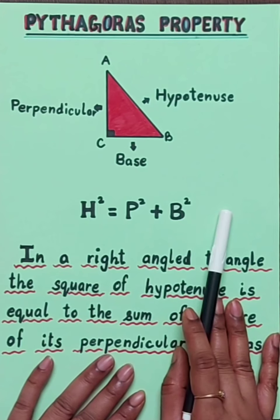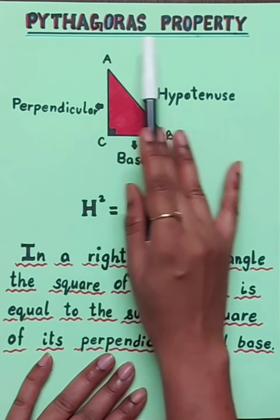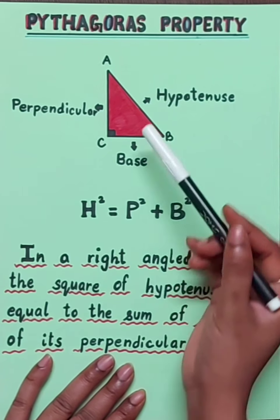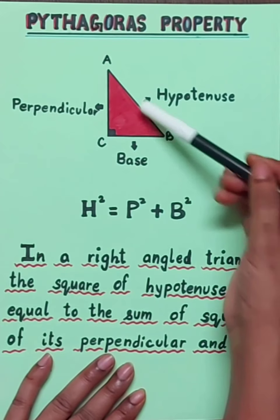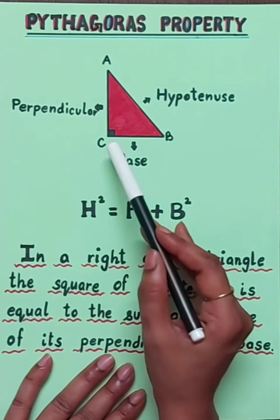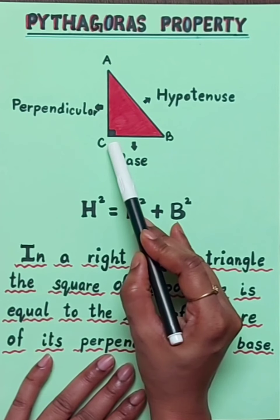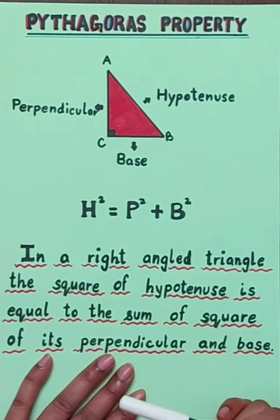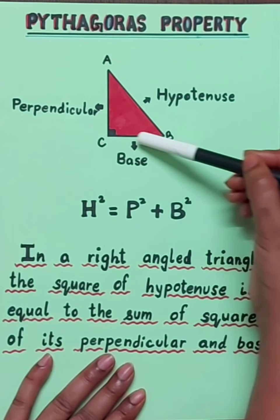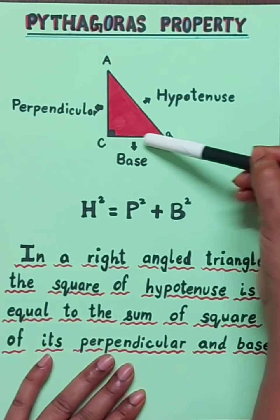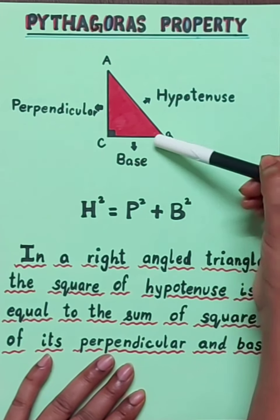The very first thing that we have to understand is that the Pythagoras property holds for a right-angled triangle. Here I have drawn a right-angled triangle — this is triangle ABC, which is right-angled at C. In a right-angled triangle, there are two perpendicular sides. You can see here AC and CB — these are the two perpendicular sides.